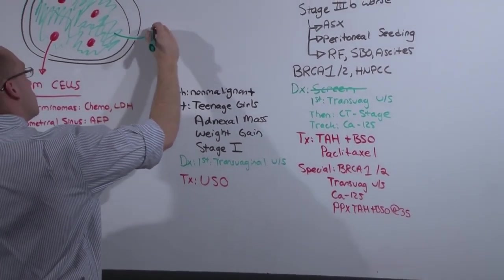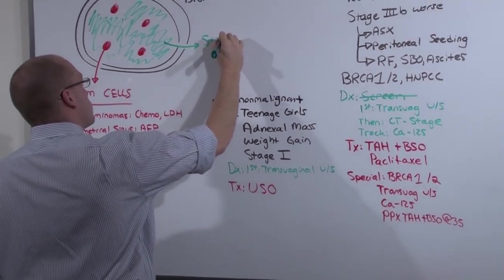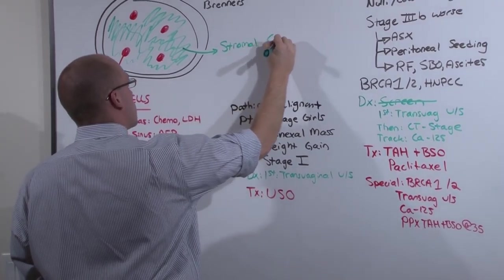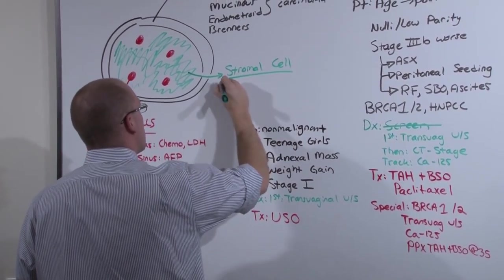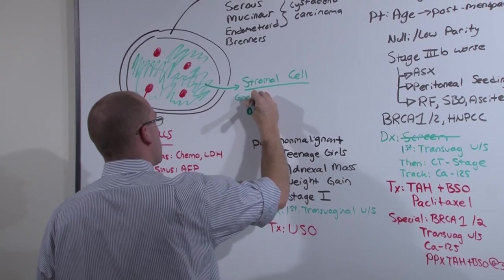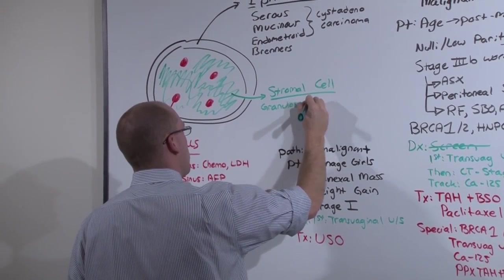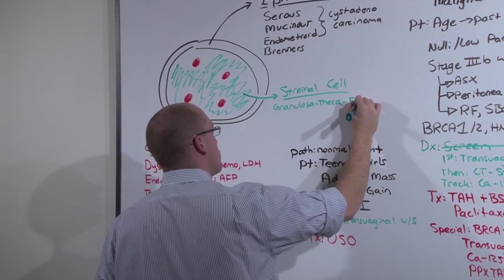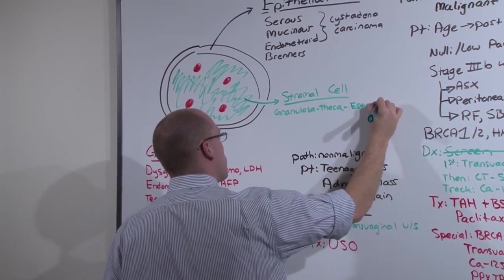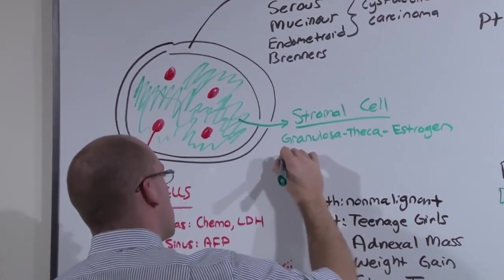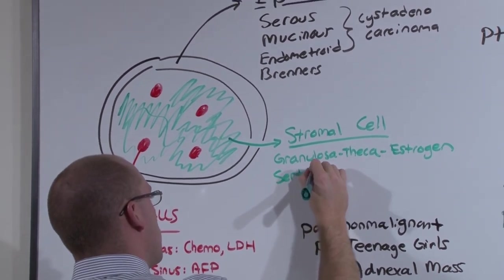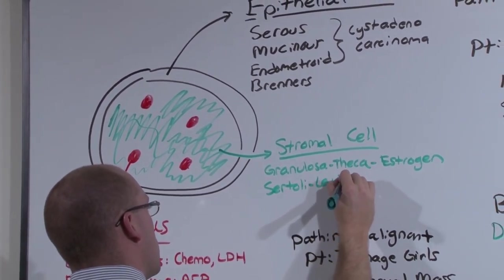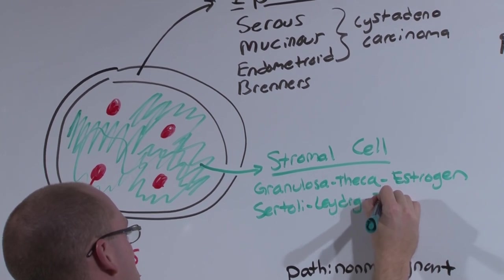It's going to be the stromal cell tumors. And there are two of them. The granulosa theca tumors produce estrogen. And Sertoli-Leydig tumors produce testosterone.